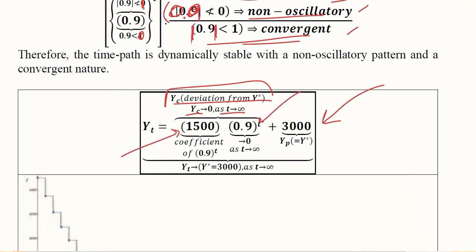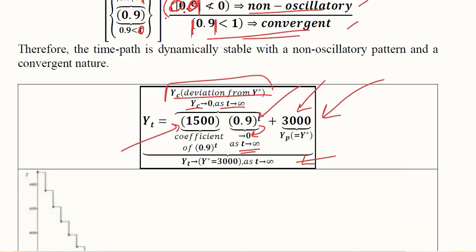This is the final result: there is dynamic stability and convergence. This is the equilibrium value, that is 3000. Now this is plotted on a graph here.